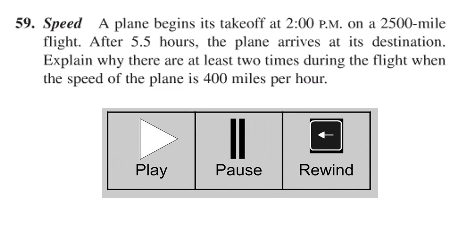Here is a problem dealing with a plane. A plane takes off at 2 p.m. on a 2,500 mile flight. After five and a half hours the plane arrives at its destination. Explain why there are at least two times during the flight when the speed of plane is 400 miles an hour. And so again you should pause this, try to work this problem, play, and rewind as needed.